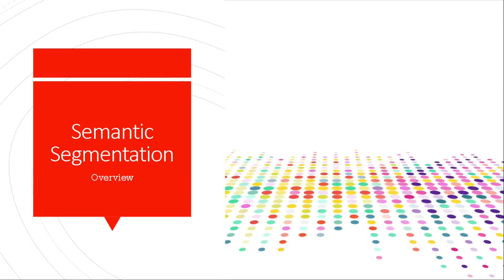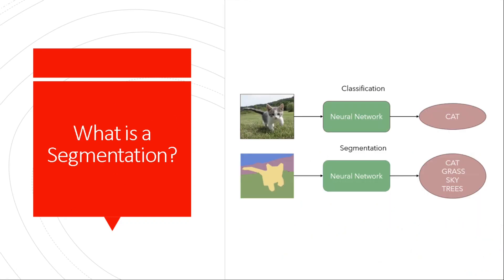Hi and welcome back. In today's tutorial we will talk about segmentations, specifically semantic segmentation. When we start to learn deep learning, our first experiments are tasks usually related to solving classification problems. For example, we need to determine a class label of the object in the image.